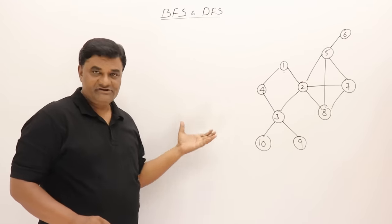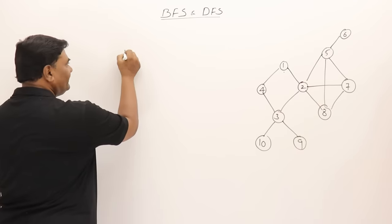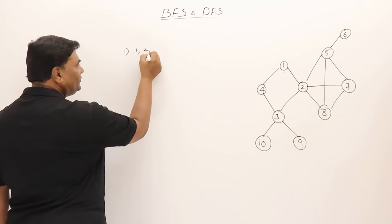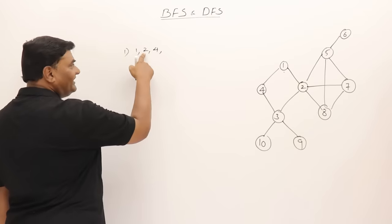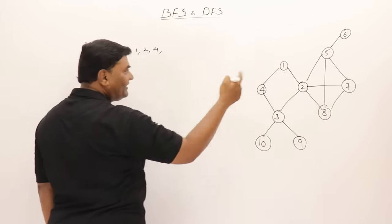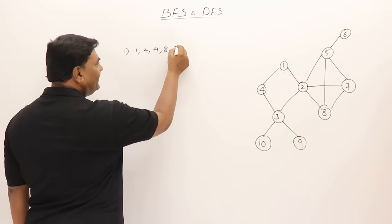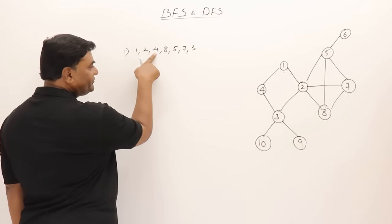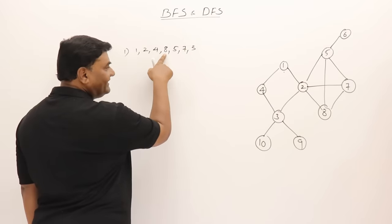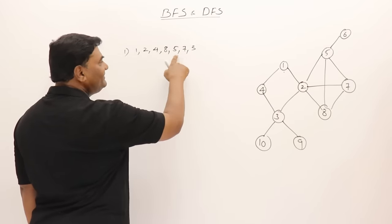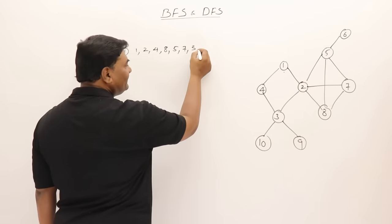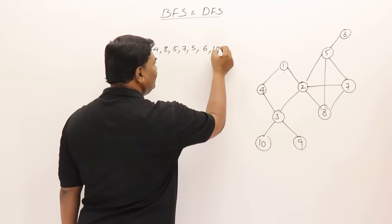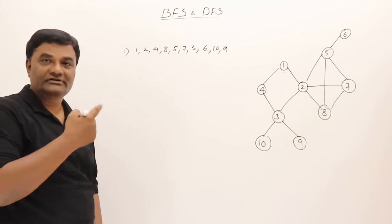Following these rules, you can get many valid answers. Here's one: start from vertex 1, explore adjacent vertices — first visit 2, then 4. Now explore 2 first since it was visited first. Adjacent to 2 are 8, 5, 7, and 3. Then explore 4 — adjacent is 3, already visited. Then explore 8 — adjacent 5 and 7 both visited. Then explore 7 — 6. Explore 3 — gives 10 and 9. This is also a valid answer.